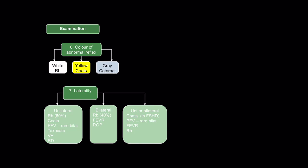What can be unilateral or bilateral? Coates disease can occur very rarely in fascio-scapulohumeral dystrophy, and those Coates-like changes are bilateral. PFV is rarely bilateral. FEVR can be uni or bilateral, though classically bilateral but asymmetrical. And retinoblastoma can be uni or bilateral.